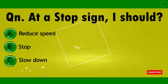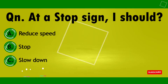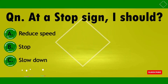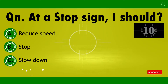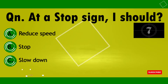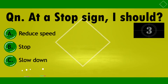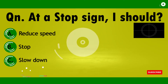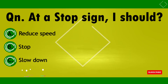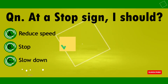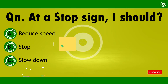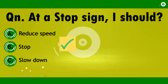Now moving on to number three, which says: at a stop sign, you should — what should you do at a stop sign? Should you reduce speed, stop, or slow down? The law says that if you arrive at a junction controlled by a stop sign, your vehicle must stop immediately before the stop line — if there is one marked on the road surface. If there is no line, stop your vehicle in a position such that you will not interfere with traffic.